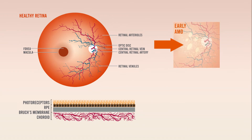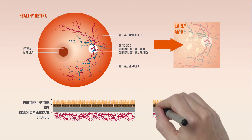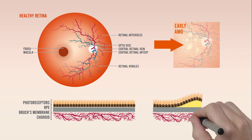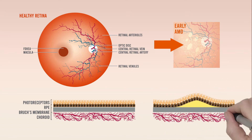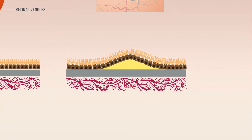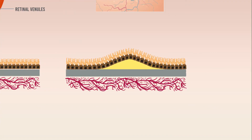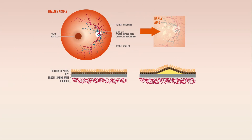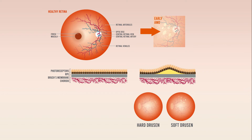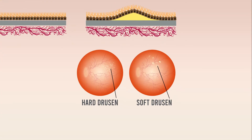As the AMD process begins, changes to the retina appear. Changes in early AMD include drusen, which are yellowish deposits of cholesterol, lipids, and proteins that develop between the retina and Bruch's membrane. They deform the overlying RPE and photoreceptor layer, ultimately resulting in vision loss. Drusen can be classified as hard or soft: hard drusen are small with distinct borders, and soft drusen are larger and less well-defined. Patients with soft drusen more commonly develop advanced AMD.